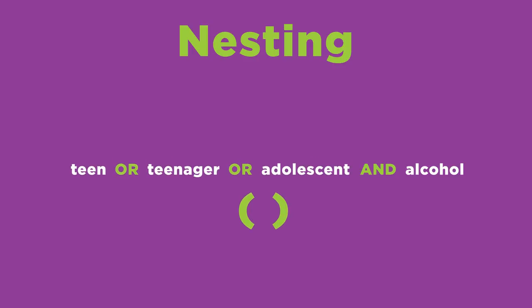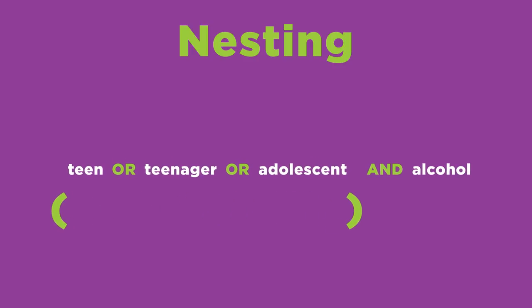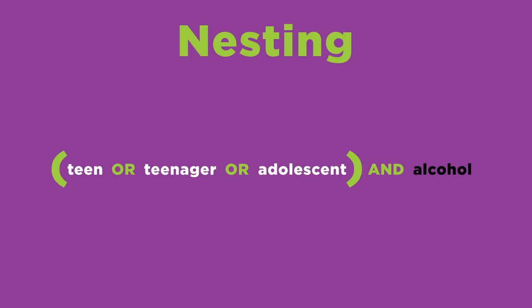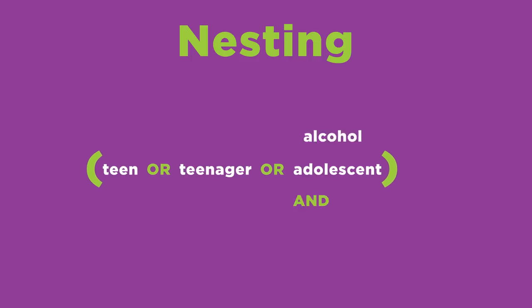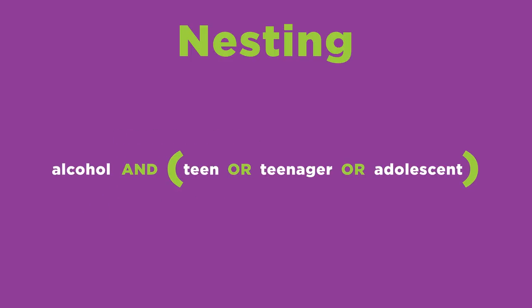Using parentheses to group the three synonyms lets the system know that all of the results must include the word alcohol, but they can either mention the term teen, teenager, or adolescent. Arranging the terms in this order would accomplish the same thing.